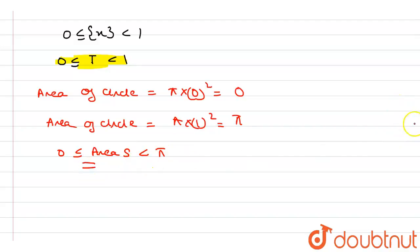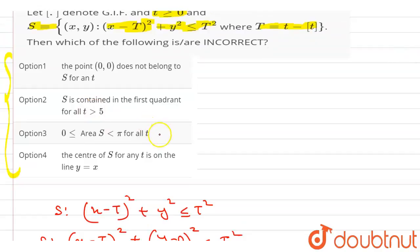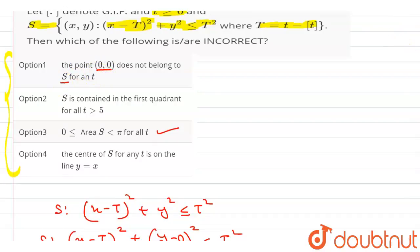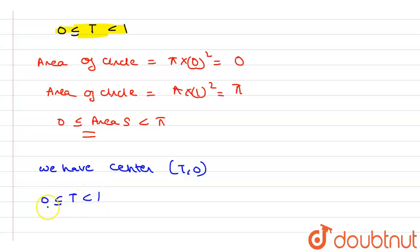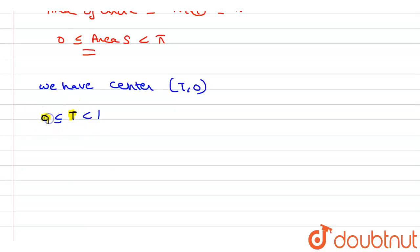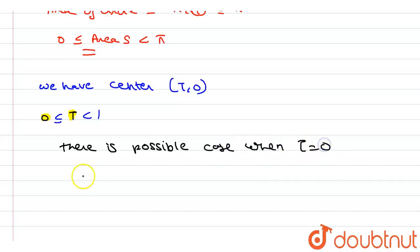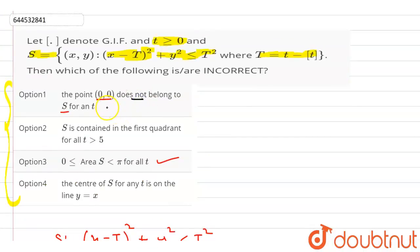So option number 3 is correct. Now option number 1 says that the point (0, 0) does not belong to S. The center of the circle is (t, 0) and we have shown that t lies between 0 and 1. When t equals 0, the center of the circle is (0, 0), so this is a possible case. Therefore option number 1, which says (0,0) does not belong to S, is incorrect.